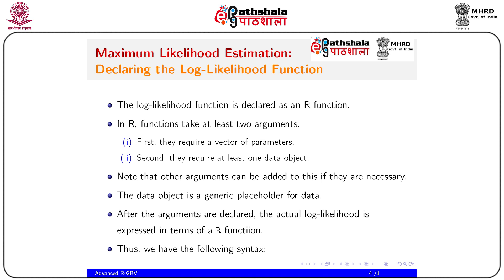In this module we'll mainly talk about optimization techniques in R, with main focus on the Newton-Raphson method — univariate and multivariate — which is very useful for many statistical computations, especially the EM algorithm and maximum likelihood estimations for estimating parameters. The log likelihood function is declared as an R function. R functions take at least two arguments: first, a vector of parameters, and second, at least one data object.